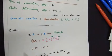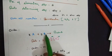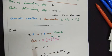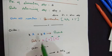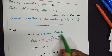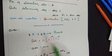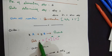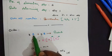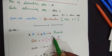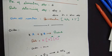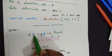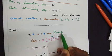Moving on to the next concept: order. Consider the reaction xA + yB → product, where X and Y are stoichiometric coefficients and A and B are reactants. The rate law is written as: Rate = k[A]^m[B]^n. Here, out of X moles of A, only M part contributes to the product; similarly, out of Y moles of B, only N part contributes.